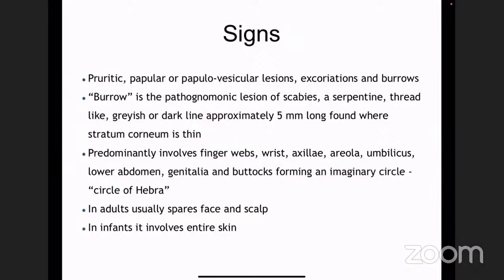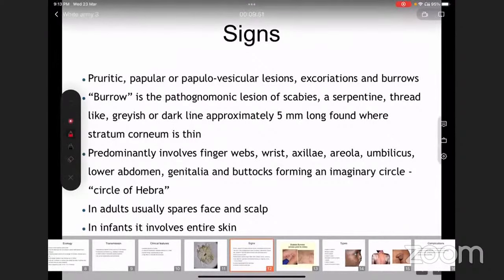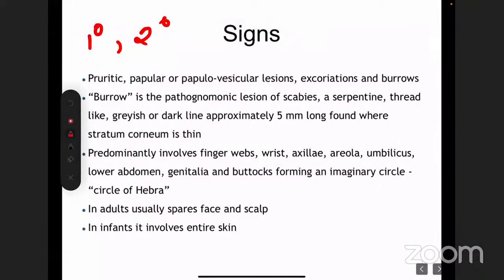Coming to the clinical signs in scabies: the primary lesion is a papule or papulo-vesicular lesion. Secondary lesions are excoriations, which happen due to intense itching found all over the body. The special lesion is a burrow — this is the pathognomonic lesion of scabies, defined as a serpentine thread-like grayish or dark line approximately 5 millimeters long. It is found specifically where the stratum corneum is thin.